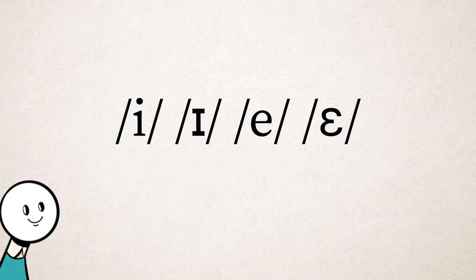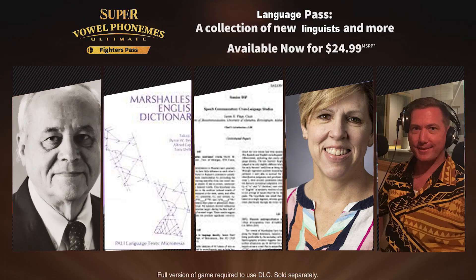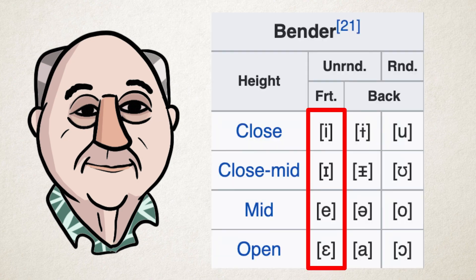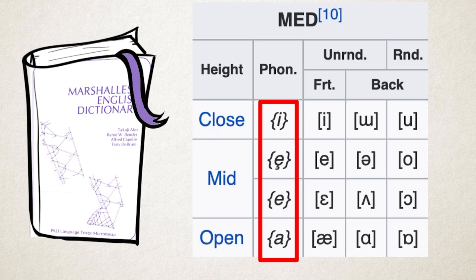So, whose vowels are competing? Three, two, one, go! First, we got Bender, who's like [i], [ɪ], [e], [ɛ]. Then we got the Marshallese English Dictionary, who's all like [i], [ɪ], [e], [ɛ], [æ].